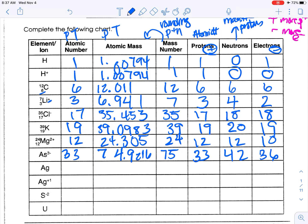Silver is number 47. Mass is 107.868, which rounds to 108. There are 47 protons. 108 minus 47 is 61 neutrons. The charge is the same — there's no charge written here — so 47 electrons.